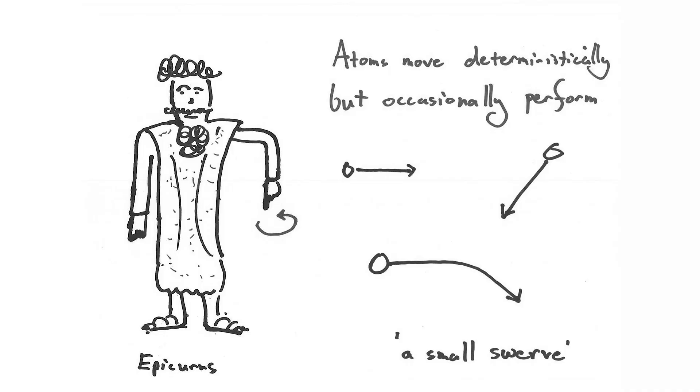Interestingly, Turing — prior to coming up with his ideas about the halting problem and addressing Gödel's theorem — was actually studying quantum mechanics. He was reading von Neumann's book and studying quantum mechanics because he was interested in the questions of consciousness and free will.